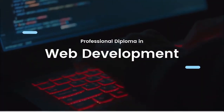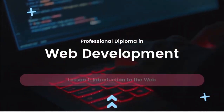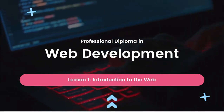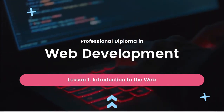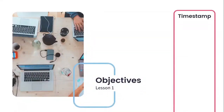Now that we have all of that out of the way, let's dive right into the content. This is lesson one in the professional diploma in web development, and in today's lesson it's simply going to be an introduction to the web. Let's go ahead and have a look at the objectives for today's lesson. For our first topic, we'll be covering the internet and the worldwide web. I want you to take note that in the event you'd like to skip ahead to some of the core topics, I've included timestamps here for you so you can navigate accordingly.